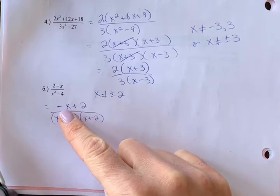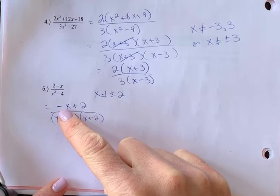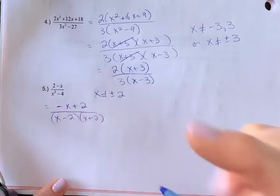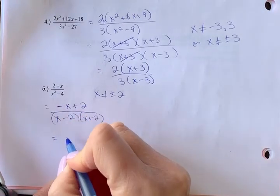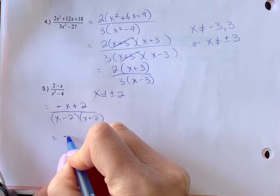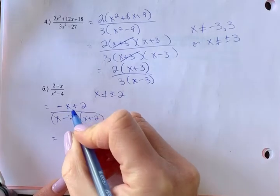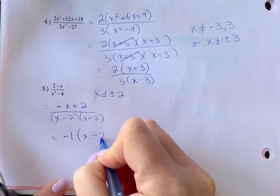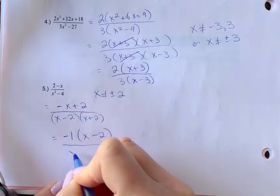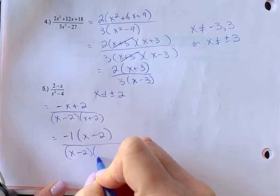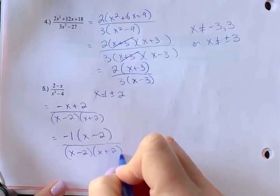However, when you have a situation like this, we're going to factor out a negative one. We typically don't want that first term, the leading coefficient, to be negative. So we factor out a negative one, which leaves us with positive x minus two. That's a key step to show that you're factoring out that negative one.